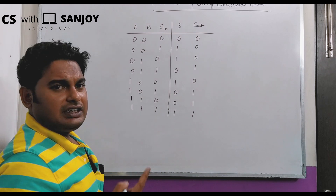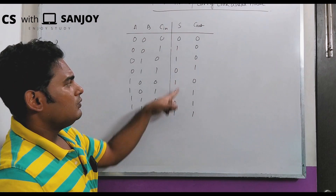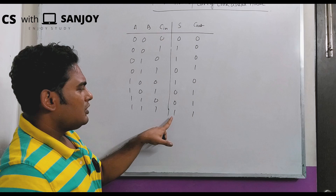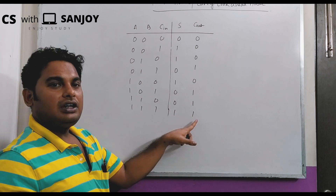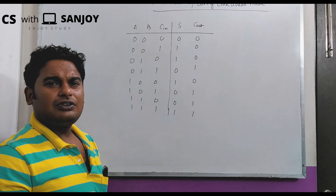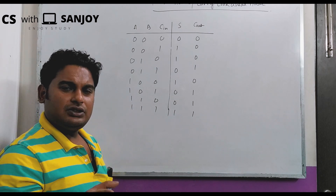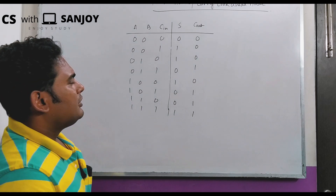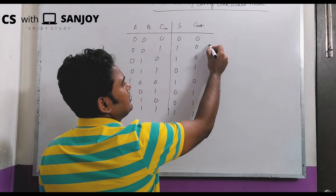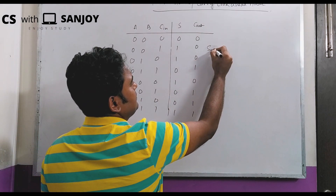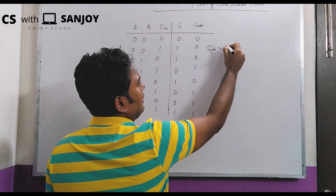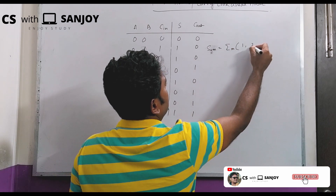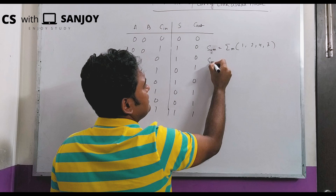For the sum, if there is a single one or an odd number of ones, the sum will be one. For carry, if there are two or three ones among the inputs, carry will be one. The Boolean expression for sum, using the sum of minterms 1, 2, 4, 7, equals A XOR B XOR C_in.